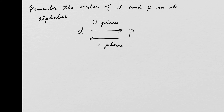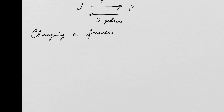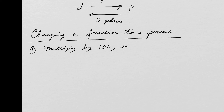What if we want to change a fraction to a percent? Whenever you want to go to a percent, you multiply by 100 and add the percent sign. If you had a decimal number, multiplying by 100 was equivalent to moving the decimal point two places to the right. But with a fraction, you literally multiply by 100, simplify, then add a percent sign.